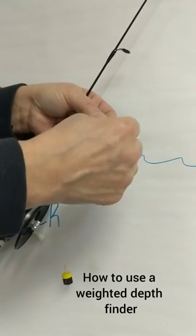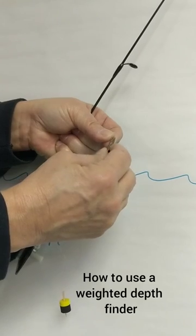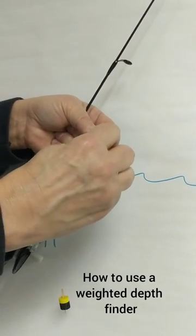To use the weighted depth finder, you will want to first clip it over your hook. In this demonstration, we used an alligator weight depth finder.